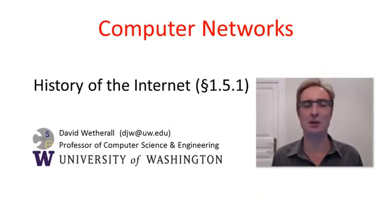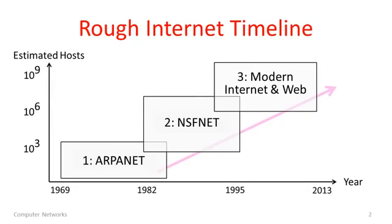G'day viewers. In this segment we'll cover a very brief history of the Internet. I've shown you a rough timeline for the Internet going from around 1970 to today, spanning more than four decades. Over that period I've drawn three main phases: the ARPANET phase, the NSFNET phase, and the modern Internet and web as we know it today.